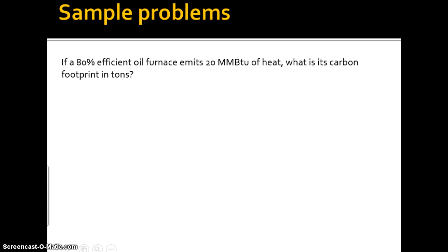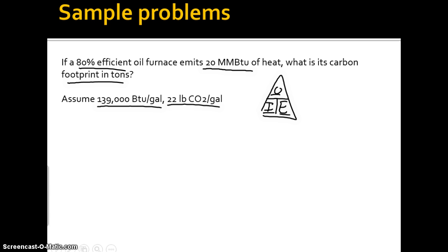So let's do one more problem. Another efficiency problem. But now we're kind of working our way back from output. So our output is given. It emits 20 MMBTUs of heat. We know it's 80% efficient. So what's the carbon footprint in tons? It's an oil furnace. So what do we need to know? We're missing something here. There is 139 BTUs per gallon and 22 pounds of CO2 per gallon. So let's see how to integrate this. Remember, we have our efficiency triangle. So in this case, we have our output and we have our efficiency. We need our input. So input is output divided by efficiency.